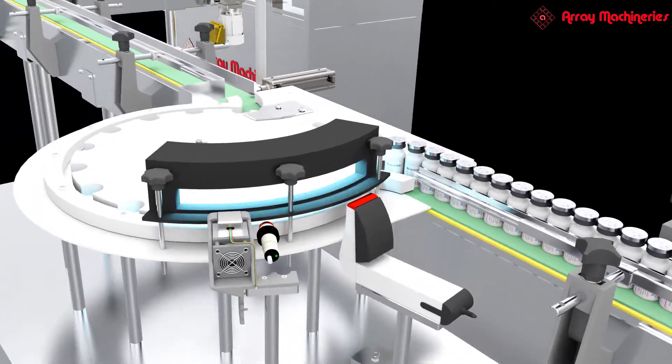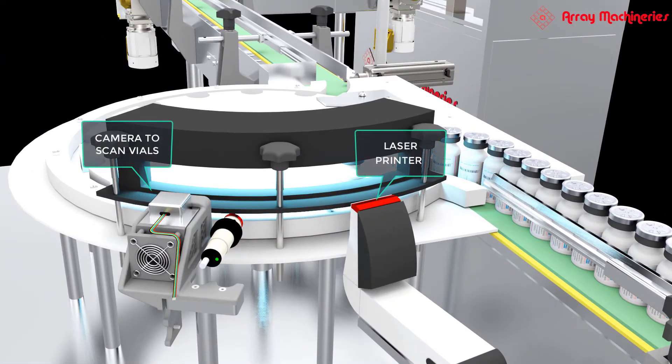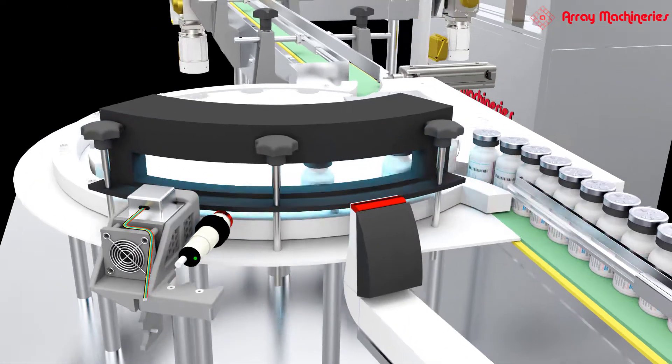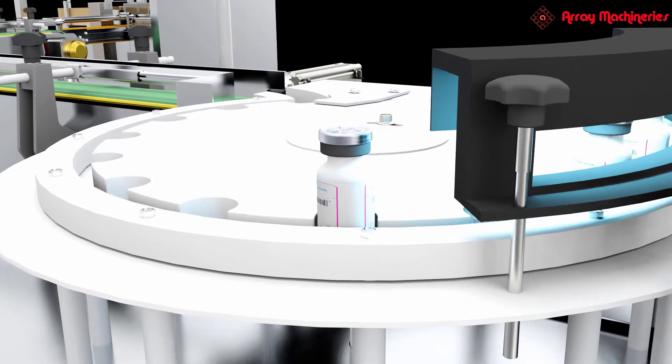Vials are then conveyed to a starwheel, where vials get laser printed and inspected. The laser printer prints while a camera checks the prints on vials.